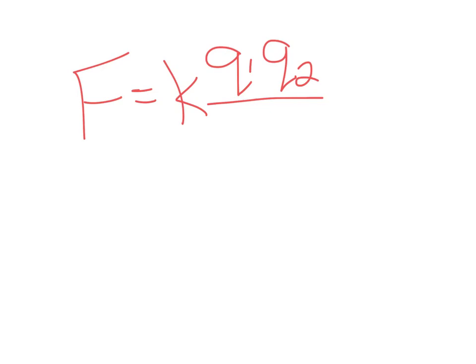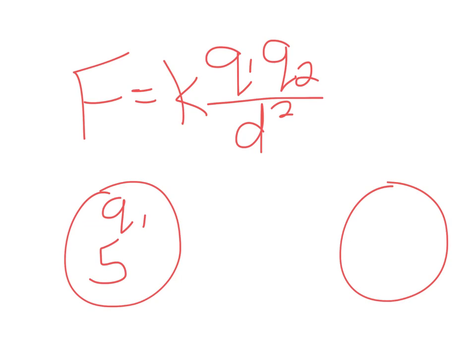So let's give it some numbers. If this charge q1 is a quantity 5, and this one is charge 2, and this distance is 5, the farther they go apart, the weaker the force. The closer they come together, the greater the force. That's our general rule.